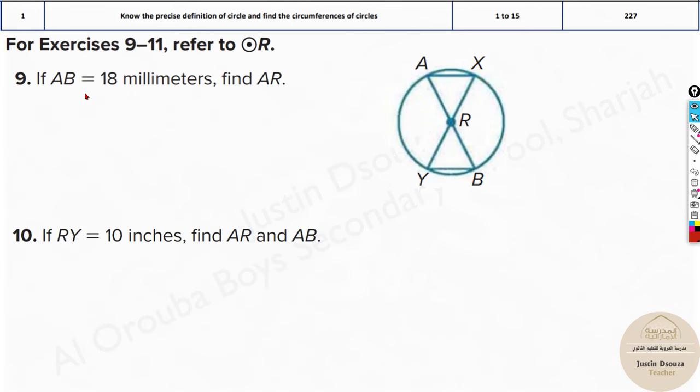Here they have given us the dimensions of AB in this particular circle, circle R. AB is known, that's 18 millimeters. What is the dimension of AR? AR is its radius. So AB would be the diameter, the total length that is given. Half of that would be AR, that would be 9. So you can just do 18 by 2 equals 9. Because this is the MCQ part, you don't need to do any detailed method.